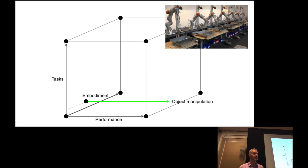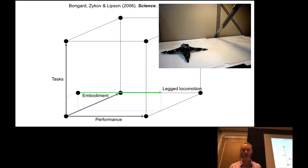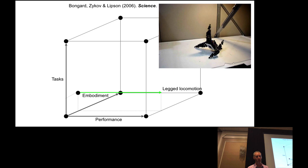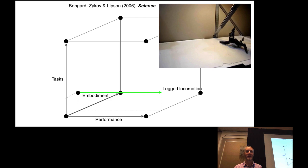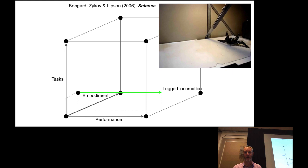This is the standard paradigm in robotics. As another example, here's some older work from my group, where we have a different robot with a different level of embodiment trying to perform legged locomotion. We used a different kind of training algorithm that enabled this robot to teach itself how to walk.